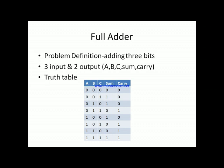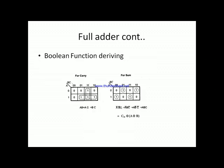We have now completed three steps: problem definition, identifying input and output variables, and deriving the truth table. Now we must derive the Boolean functions for the output variables sum and carry. The Boolean functions can be simplified using Boolean algebra postulates or the Karnaugh map method. Since there are three input variables, we use a three-variable K-map.